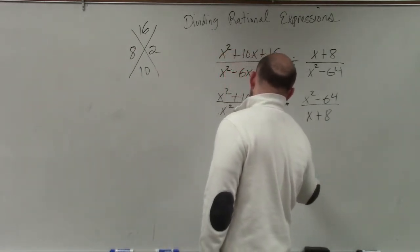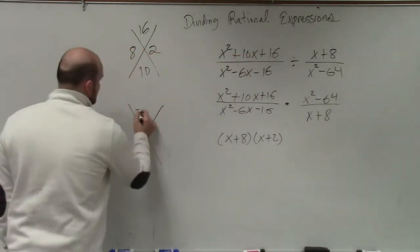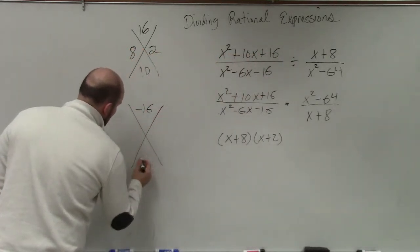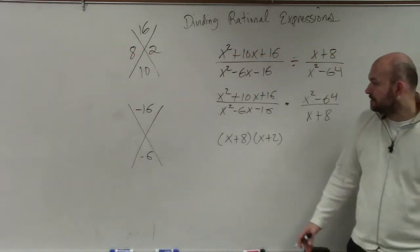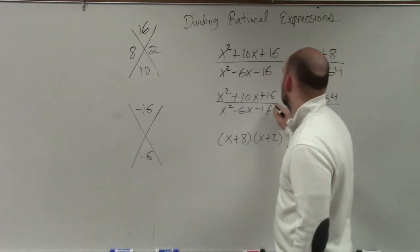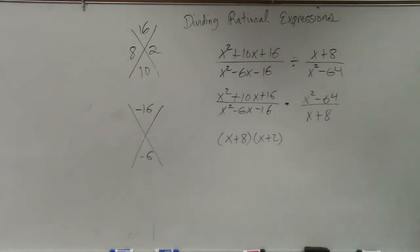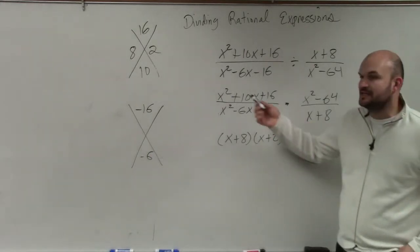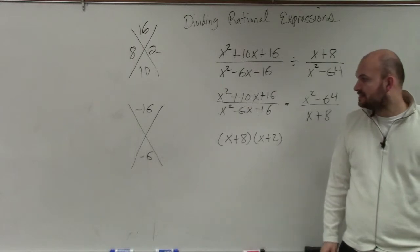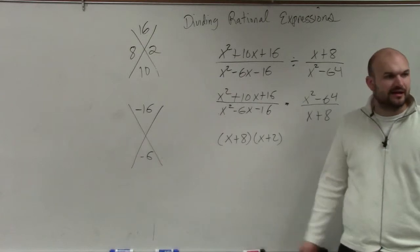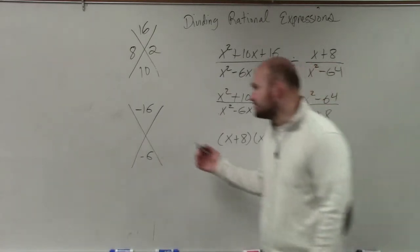Now we go to the bottom equation. Negative 16 and negative 6. What two numbers multiply to give me negative 16, add to give me negative 6?